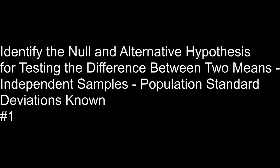When the standard deviations were unknown, your test statistic ended up being a t-score — you use the Student's t-distribution with some degrees of freedom. Here, when the standard deviations are known, your test statistic is going to end up being a z-score. Let me draw on a piece of paper what's going on here and the assumptions we're making to perform a test of the difference between two means when population standard deviations are known and samples are independent.